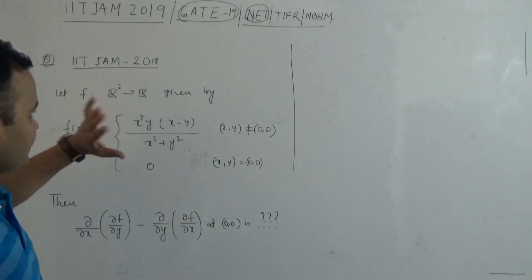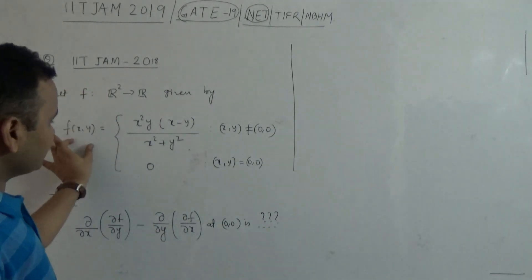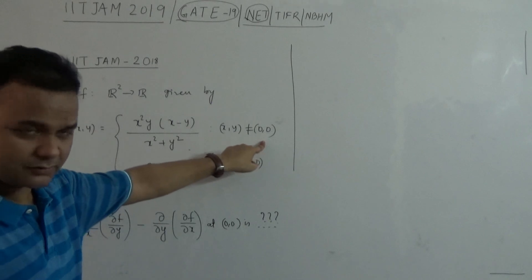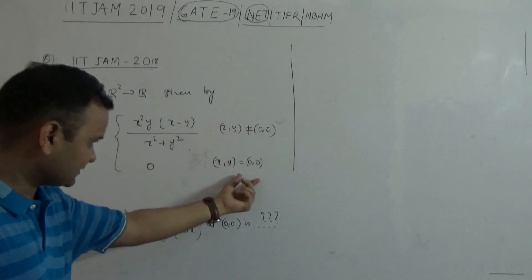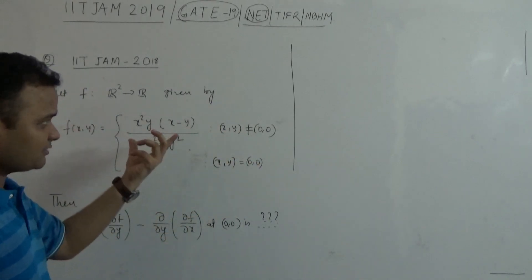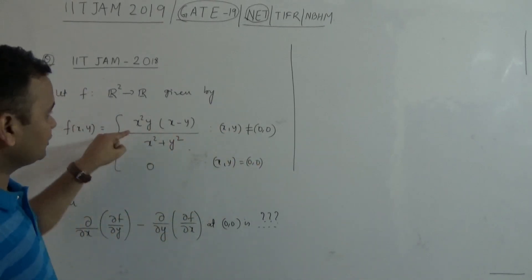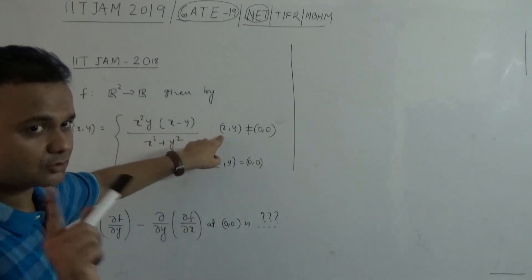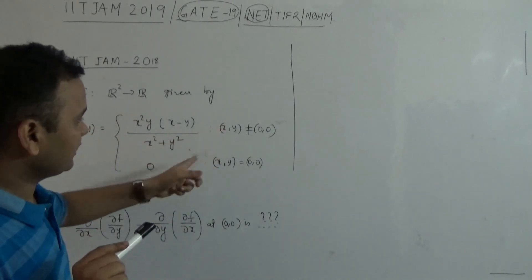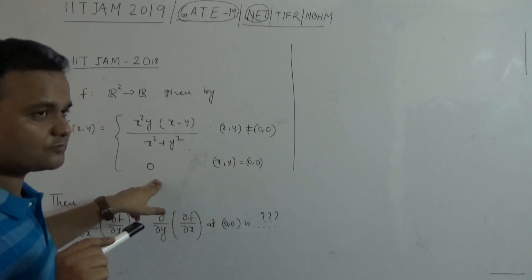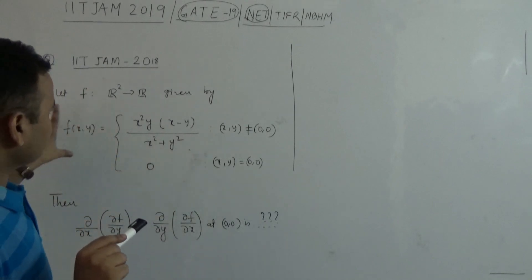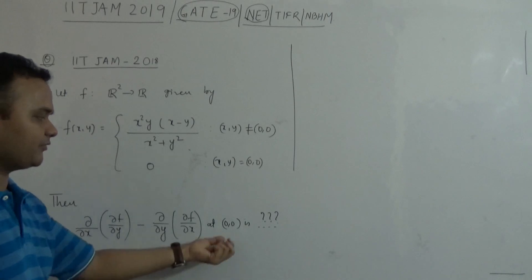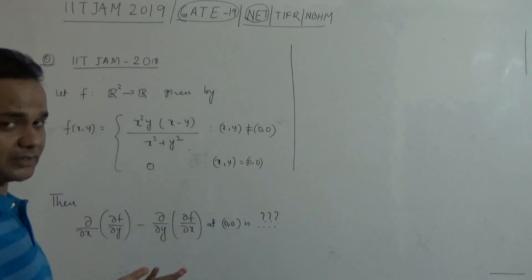The question is very simple — a function is defined. This is the function when XY is not equal to zero: it is the ratio of two polynomials when XY is not equal to zero. And when XY is equal to zero, it is the zero function. So given this function, what is the difference of their mixed derivatives? That's what they are asking.